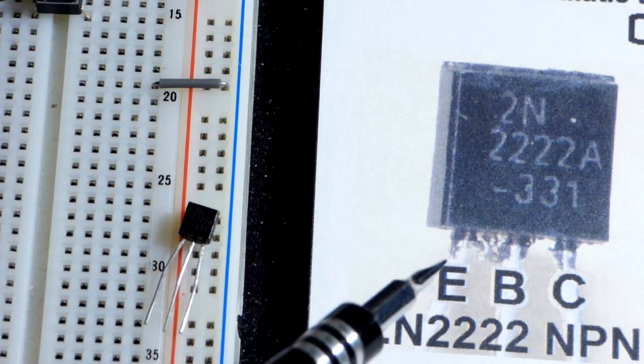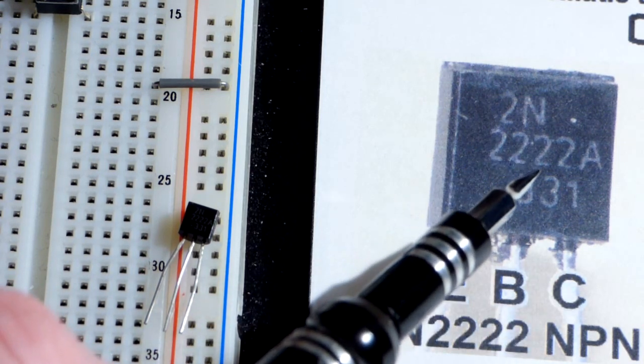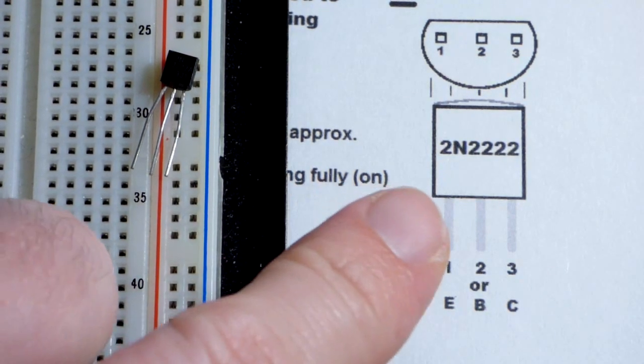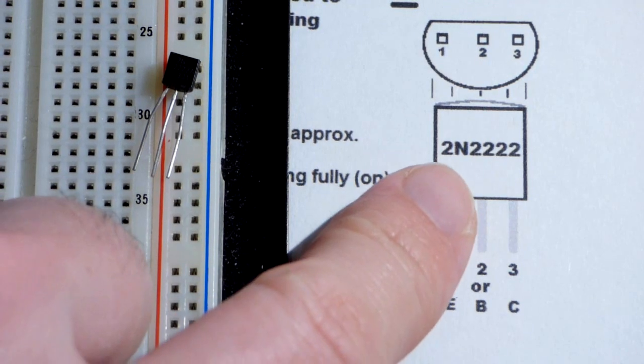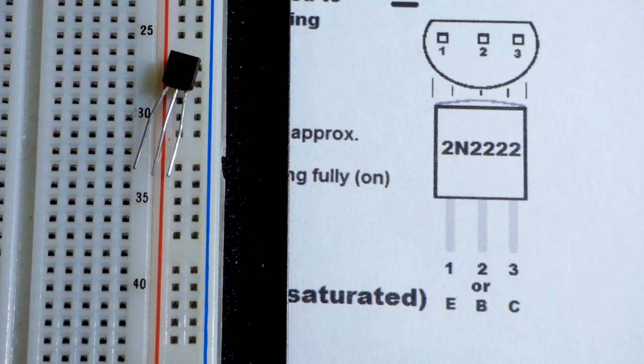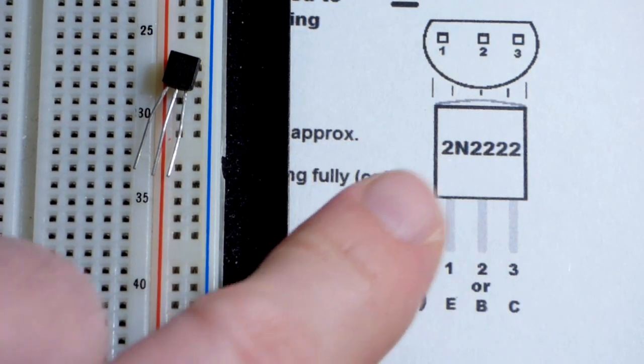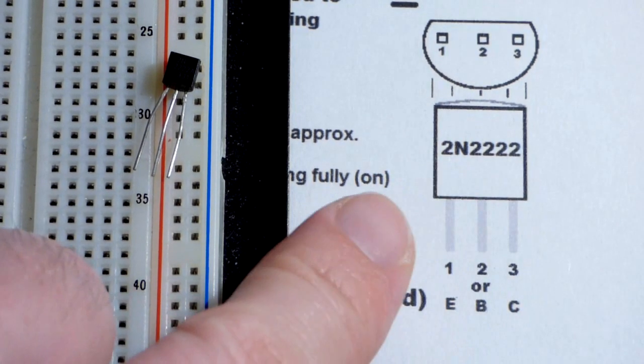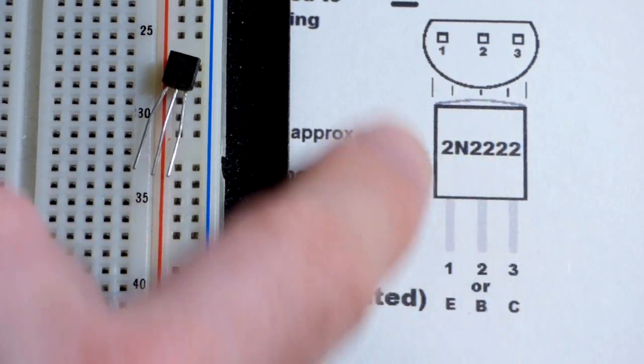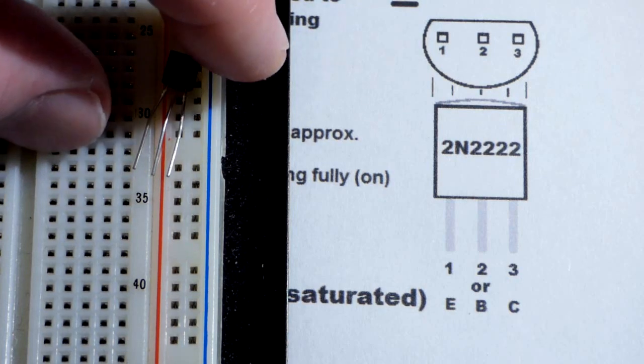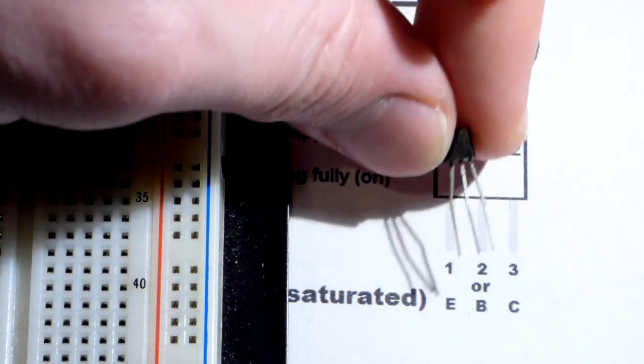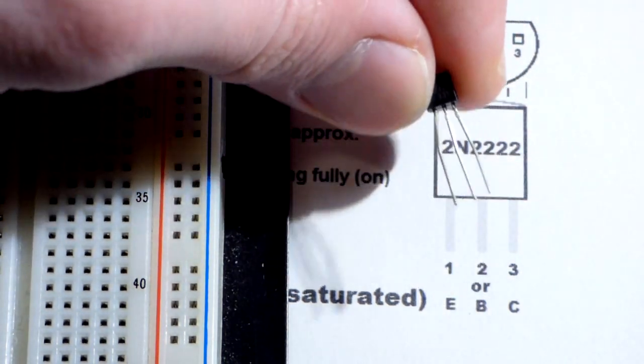But in any case, we have the pins labeled here, the emitter, the base, and the collector. That's when you are looking at the flat side of it. And if you're not sure the pin layout, you go to the data sheet. So you just go onto Google and you punch in 2N2222 and then data sheet. And you'll get a bunch of links to websites. It takes a little while to get used to searching for data sheets. But sooner or later you'll find one and it will show you the pin layout.